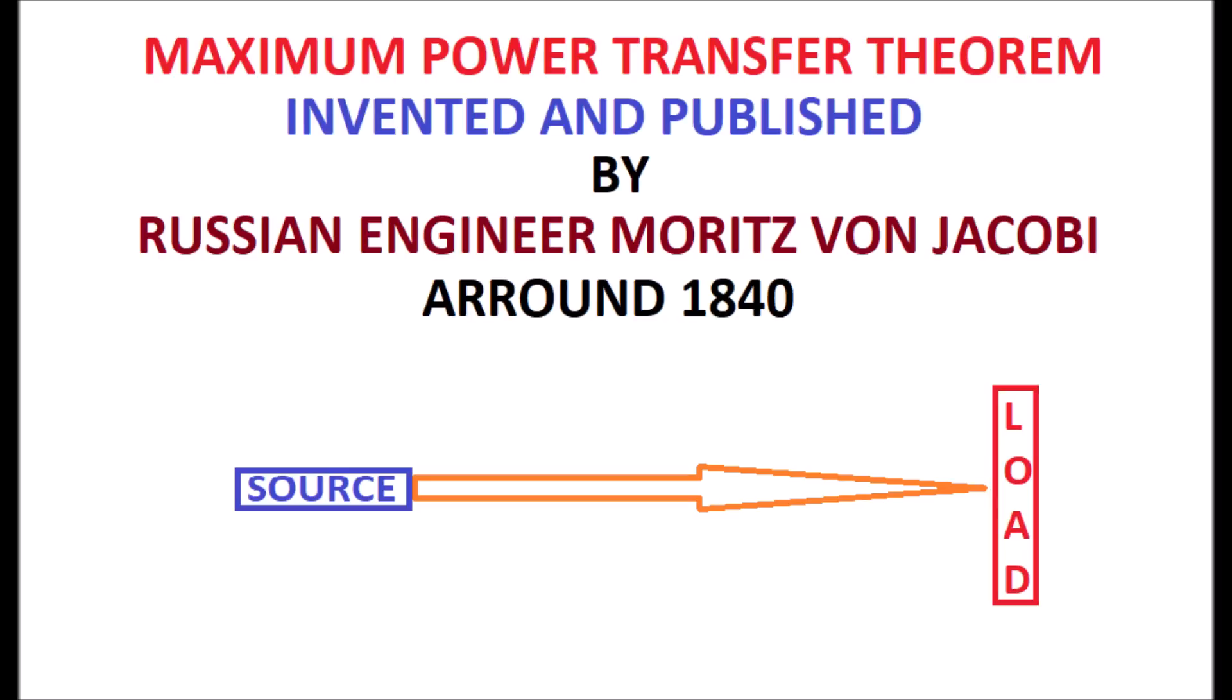The display shows the source is connected to a load, where Zs is the source impedance which is equal to Rs plus jXs, resistance and reactance.